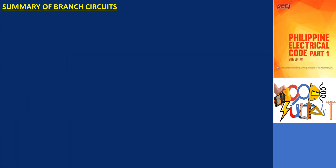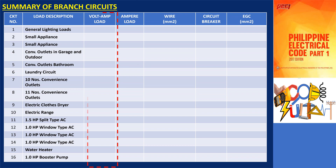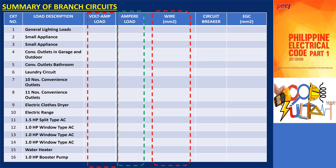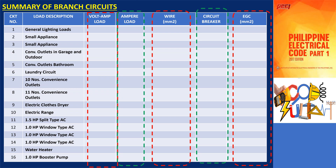The table shows the summary of branch circuits of the sample project. Branch circuit loads, sizes of conductors, and overcurrent protective devices are to be determined. For circuit number one, since the general lighting has 1,752 volt amperes, let's determine the size of the conductors and overcurrent device.